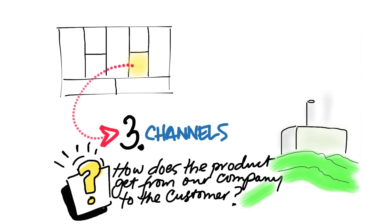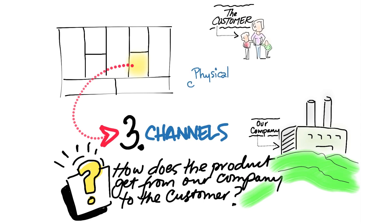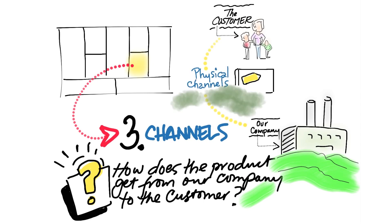When companies first started, they were essentially manufacturing concerns, and they hired agents — outsiders — to be their sales channel. The first types of companies made physical products, and therefore had physical channels: salespeople, stores, etc.